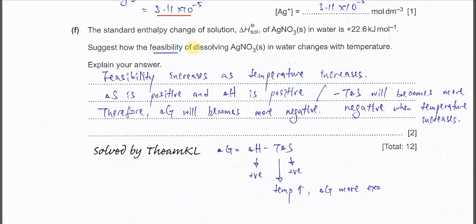Part F. The standard enthalpy change of solution for this silver nitrate in water. Silver nitrate in water is a positive 22.6 kJ per mole. Suggest how the feasibility of dissolving silver nitrate in the water change with temperature. When they ask this kind of question, so you must relate with Gibbs energy. Because it's about feasibility. So try to use this one. Delta G equal to delta H minus T delta S.